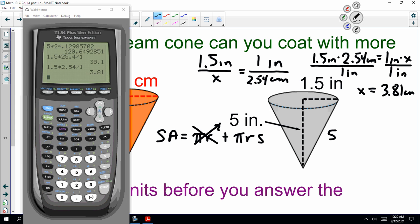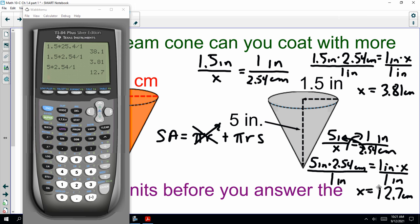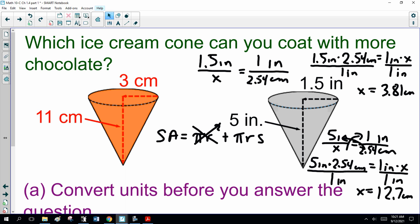And then the 5 inches. x equals 1 inch over 2.54. We cross multiply. 5 inches times 2.54 centimeters equals 1 inch times x. Divide both sides by 1 inch. 5 times 2.54 divided by 1 is 12.7 centimeters.